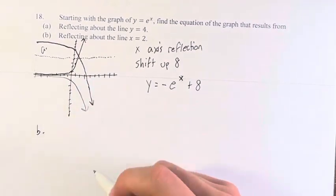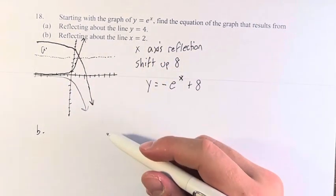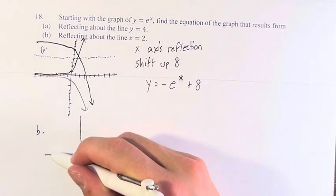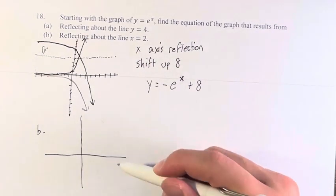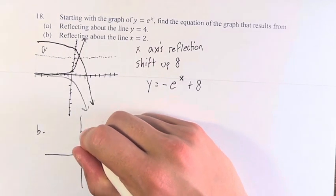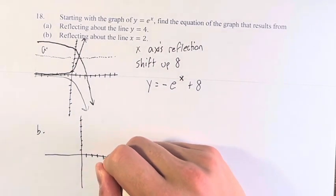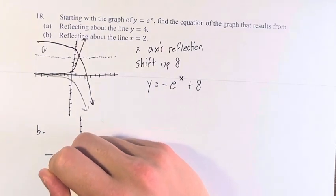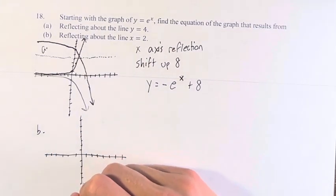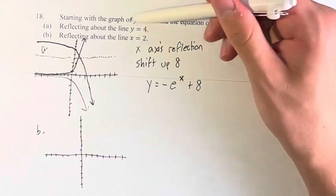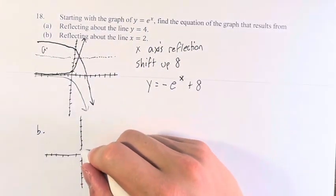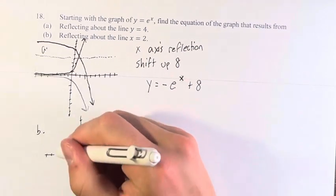Okay. Now we're going to do a similar thing, reflecting about the line x equals 2. And again, it might not seem super obvious at first what we're actually doing here. Because it isn't just a standard transformation that you're familiar with. Right? We're not reflecting against the y-axis. We're reflecting y equals 4. And here we're doing x equals 2. So again, getting that same points in.